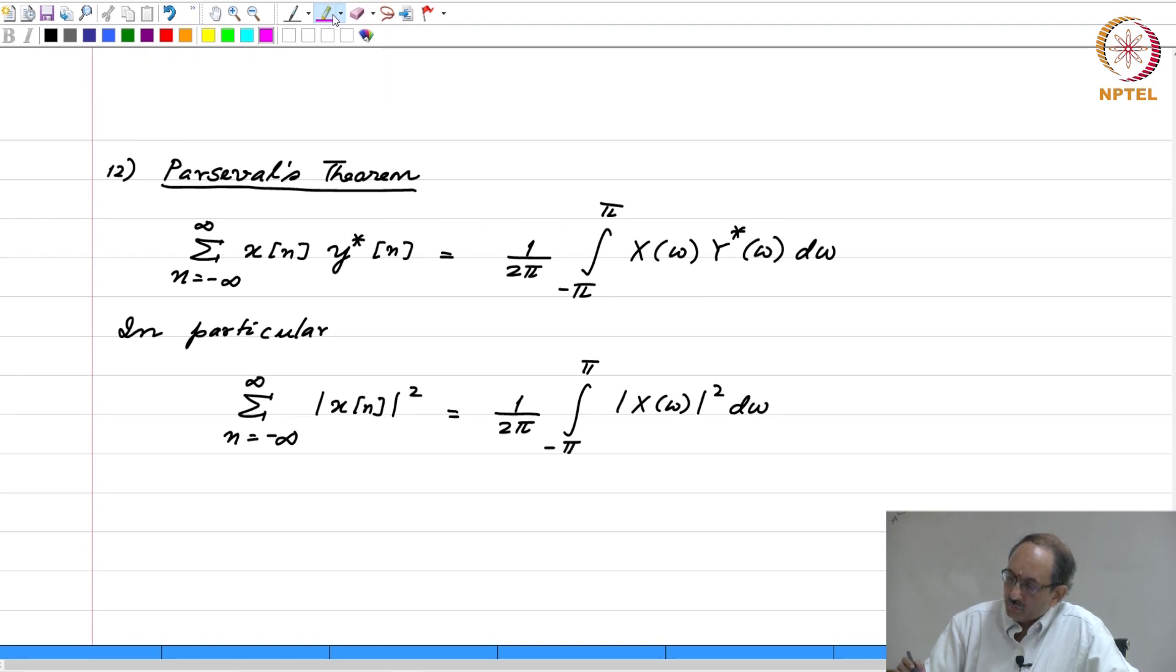And if you know something about norms of signals, this is the norm of the given signal in the time domain, the L2 norm, defined like this. This is indeed the norm in the transform domain, and the norm in the transform domain is really defined like this.